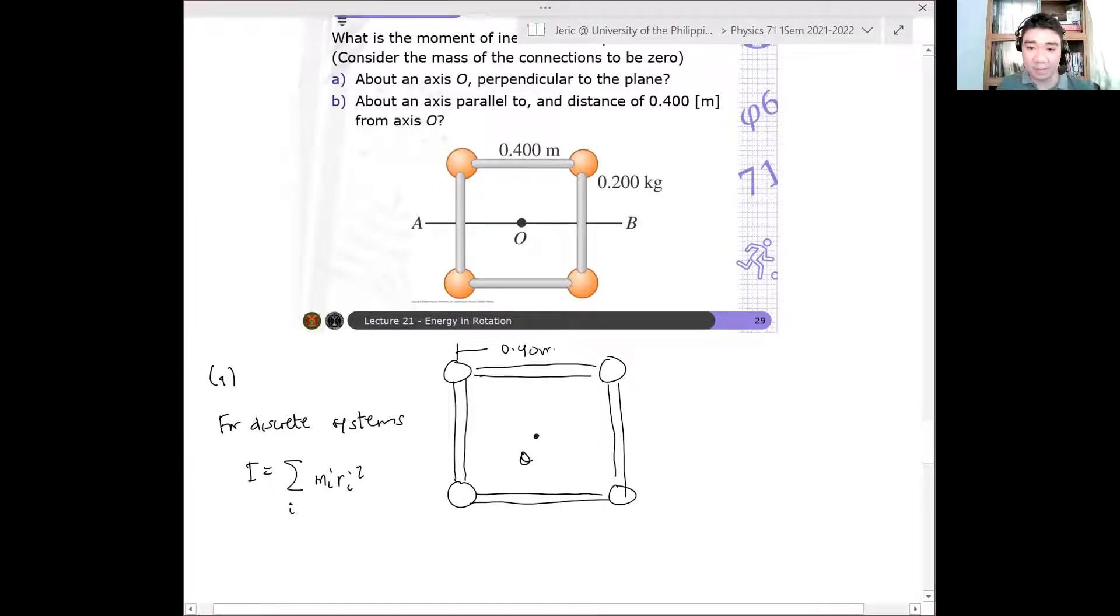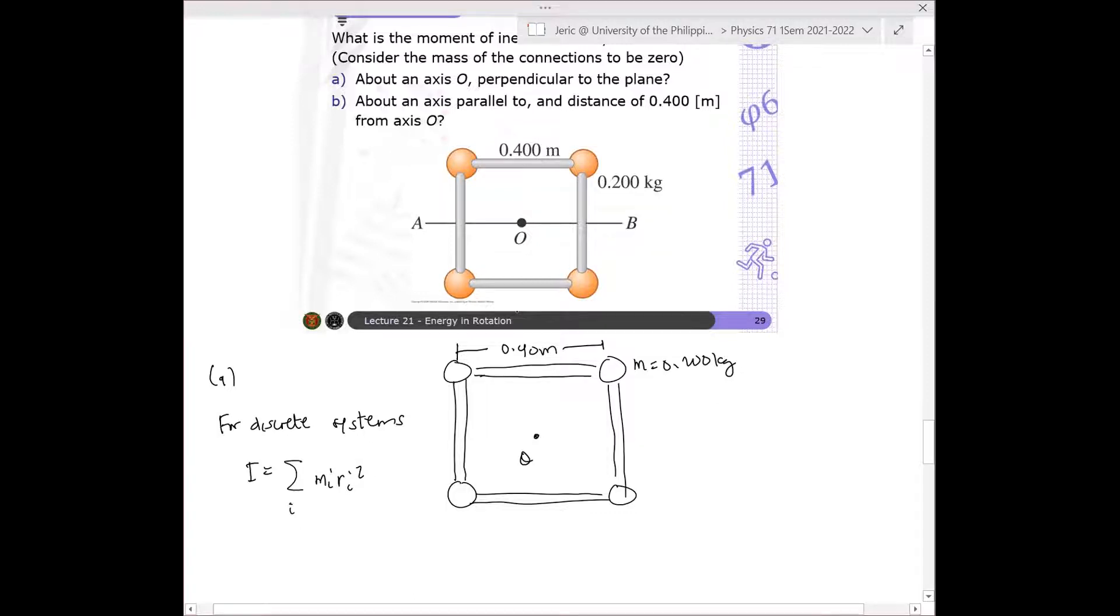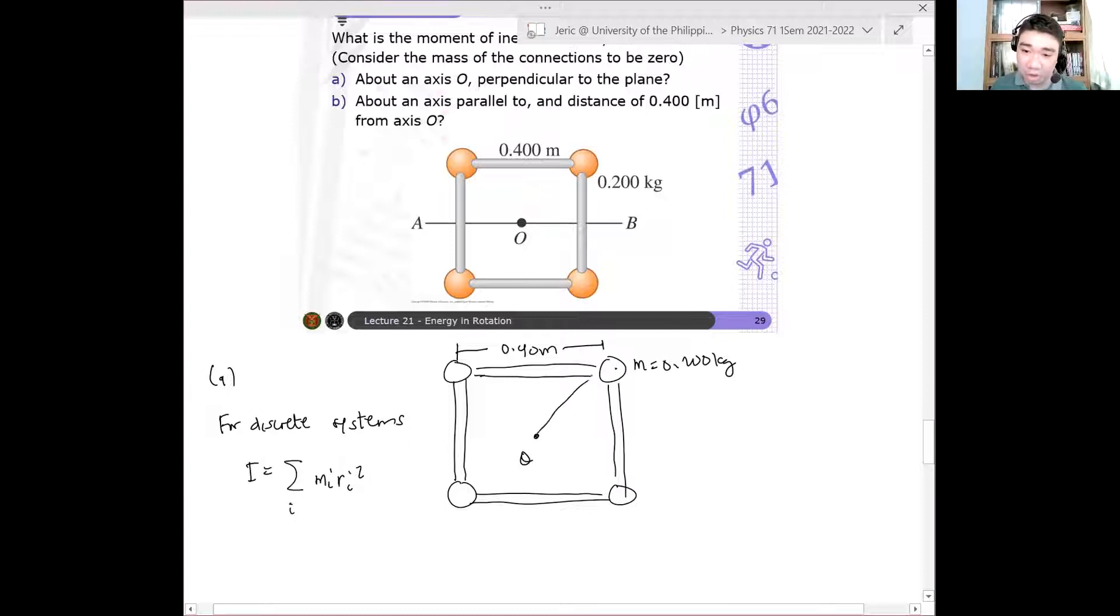So this is, let's say, 0.4 meters. This is the mass, which is about 0.2 kilograms. The question is, what is R_I? Ano'y saan yung radius? Saan yung distance from the axis of rotation? Yung 0.4 meters ba yun? No. So remember, when you determine the distance from the axis of rotation, that's the direct distance. So for example, itong masa to, ito yun. Ito yung R1 mo. And for the second one, this is your R2. For R3, ito yun. For R4, ito yun.